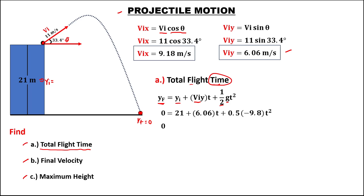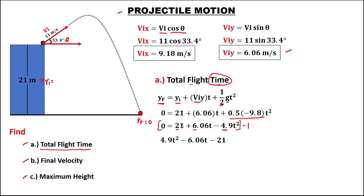To simplify: 21 plus 6.06 times t, plus 0.5 times negative 9.8 equals negative 4.9 times t squared. Since this is a quadratic equation, we use the quadratic formula. Since the first term is negative, we multiply the whole equation by negative 1. So negative 4.9 becomes positive, positive 6.06 becomes negative, and positive 21 becomes negative, equals 0.